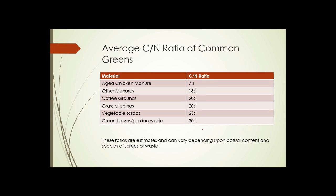Now, look at this next chart. These are some common greens that might be used in composting. Chicken manure, 7 to 1. The previous chart showed us things with way too much carbon. Now we're looking at something that has way too little carbon. Other manures, 15 to 1.